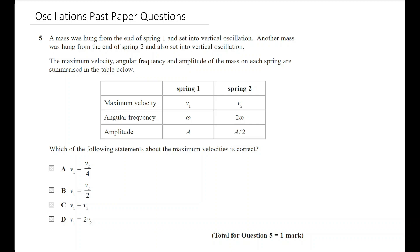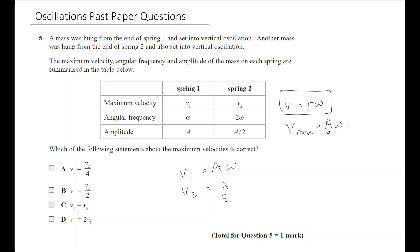This multiple choice question: a mass hung from spring one is set into vertical oscillation; another mass is hung from spring two and also set into oscillation. These are the values for maximum velocity, angular frequency, and amplitude. You need to know that v_max equals A times omega — the same as v equals r·omega from circular motion, where the amplitude acts as the radius. So v1 = Aω and v2 = (A/2)(2ω) = Aω, meaning v1 and v2 are equal, giving answer C.